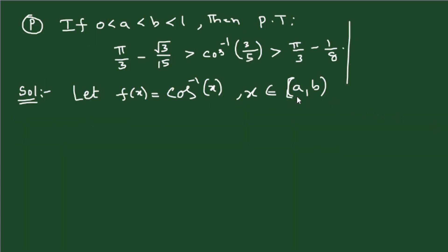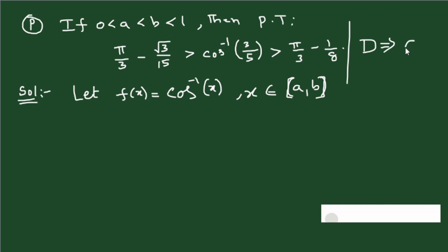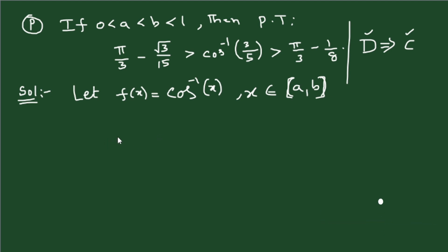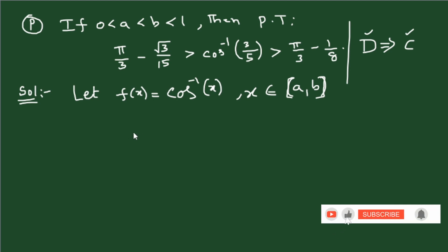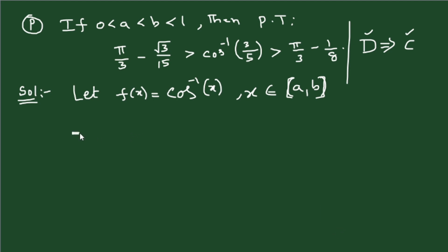Note that differentiability implies continuity — if a function is differentiable then it is also continuous. So you need not check continuity separately; just check differentiability. If differentiability fails we cannot apply the theorem, but if differentiability holds, continuity follows automatically. So let us find the derivative first. f'(x) is the derivative of cos⁻¹(x).